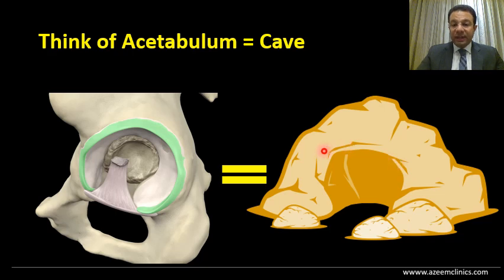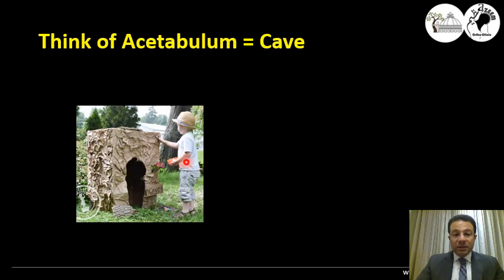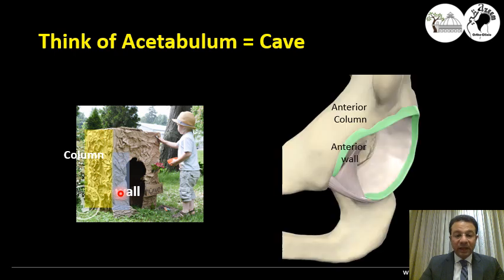A cave consists of an anterior wall and a posterior wall, with a roof as well as a floor or a medial wall. To build up this cave, you first apply a column and then build on it a wall. And that's exactly what's present in the acetabulum — you have an anterior column with a prominent anterior wall, and a posterior column with a prominent posterior wall.